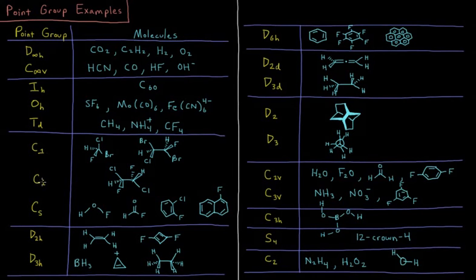Ci, where it only has an inversion center. So notice that if I invert through this center of mass here, that this F goes to there. This H goes to there. That Cl goes to there. So this has an inversion center only and identity for Ci.